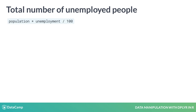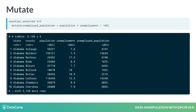You could use the formula: population times unemployment divided by 100. You use the mutate verb to calculate this variable and add it to the data set as a new variable, which we'll name unemployed_population. Add a pipe, then mutate: unemployed_population equals population times unemployment divided by 100.